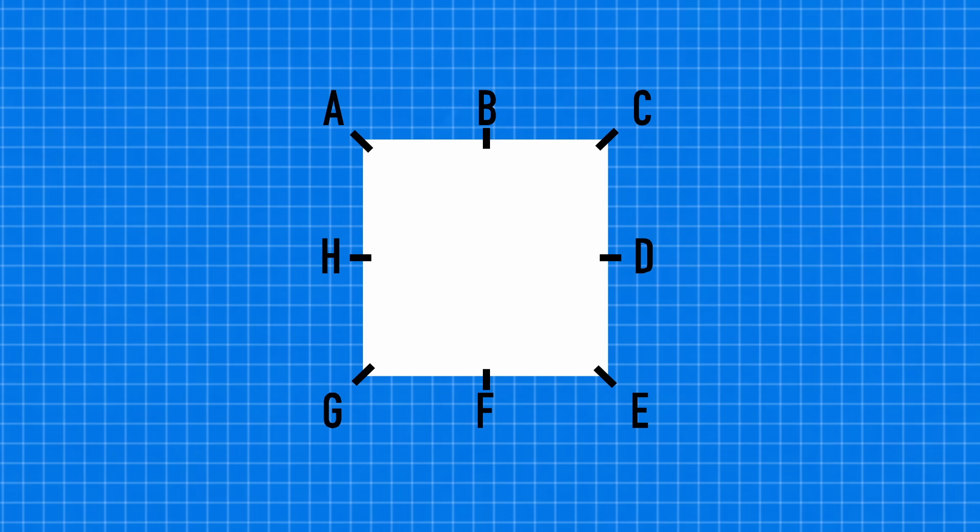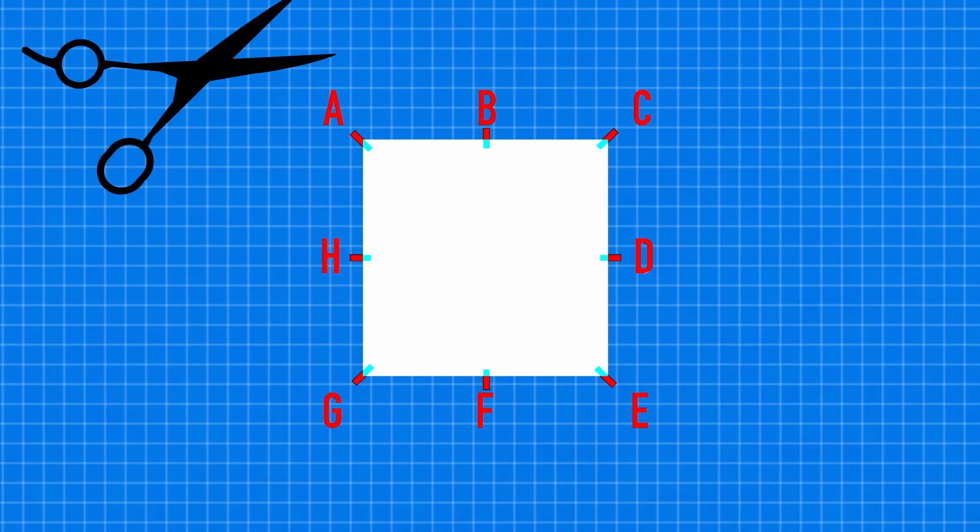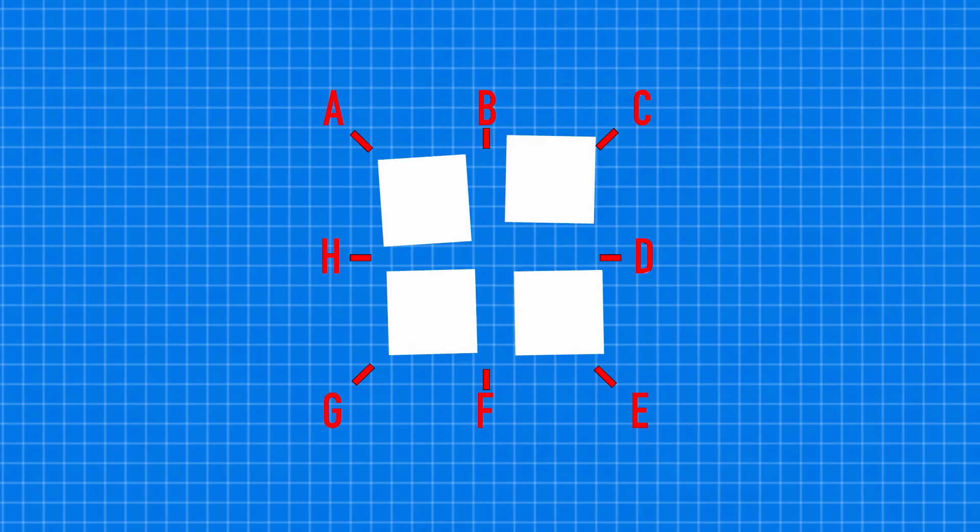When it comes to puzzles that involve cutting and rearranging, it's often helpful to actually take a piece of paper and try cutting it up to see what you can get. If we cut BF and DH, we'd get fourths, but we need fifths.